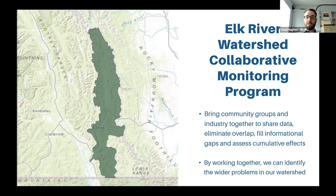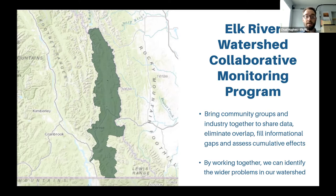We are working to build relationships and connectivity across organizations and people in the watershed, including government departments, the Ktunaxa Nation Council, river stakeholders such as mining companies, consultancies, other NGOs and land trusts, plus recreational users including rod and gun clubs and fishing guides. We plan to bring together all these entities under one tent to create an agreement to share data, eliminate overlap, and identify knowledge gaps, then develop a plan to carry out additional monitoring needed to fill those gaps.